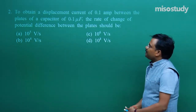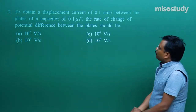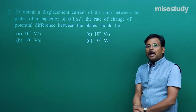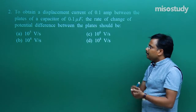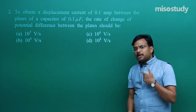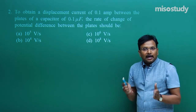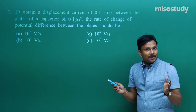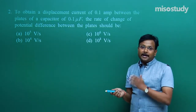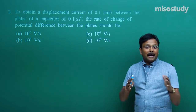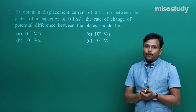The next question: to obtain a displacement current of 0.1 ampere between the plates of a capacitor of 0.1 microfarad, the rate of change of potential difference between the plates should be how much? This question focuses on the very first topic of this chapter. Recall that this chapter starts with the idea of displacement current, introduced by Maxwell to correct Ampere's equation. Maxwell ultimately combined two fundamental forces — electric and magnetic.